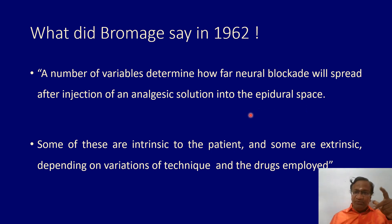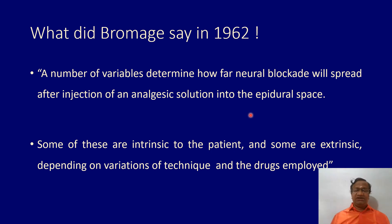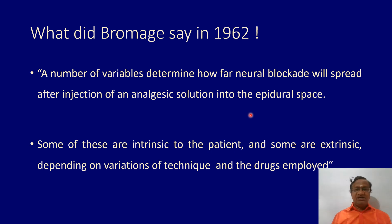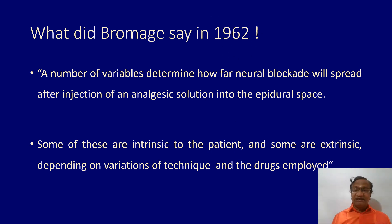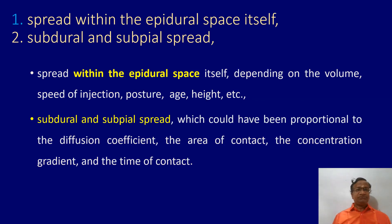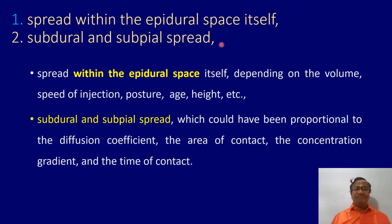So now we have given the drug into the epidural space, and it has to produce a neural blockade. How far will it spread, and what are the variables? Some are intrinsic to the patient — such as patient's age and height — and some are extrinsic, depending upon your technique, where you inject, and the drugs employed. This is what Brahmach told in 1962.